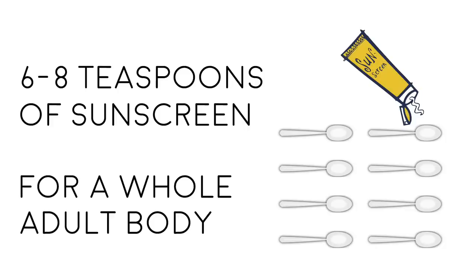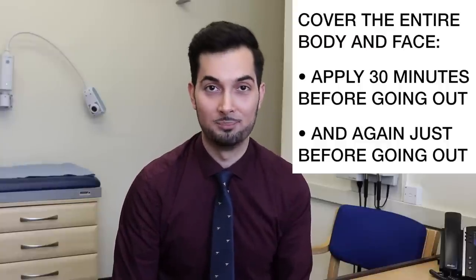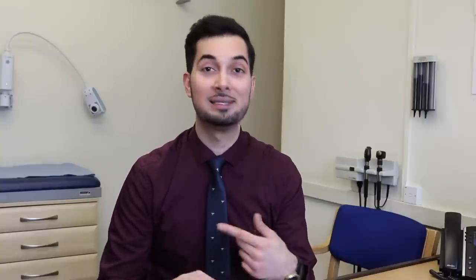In terms of application, you need to apply six to eight teaspoons of sunscreen at least 30 minutes before going out in the sun. Reapply at least every two hours, and more often if you're getting wet and it's washing off. Getting a sunburn is very serious — getting it just once every two years triples your risk of melanoma-type skin cancer. I can't stress enough how important it is to protect yourself.